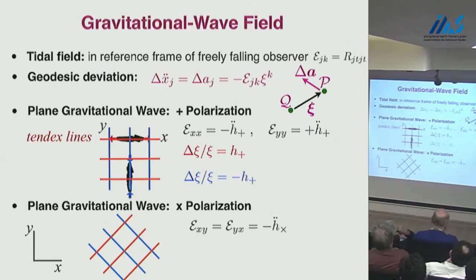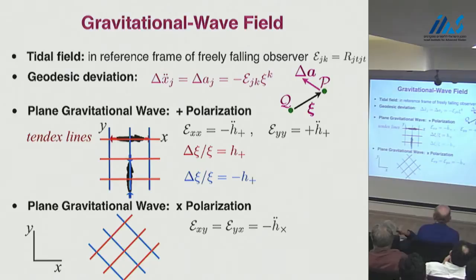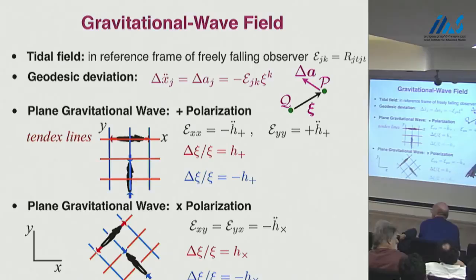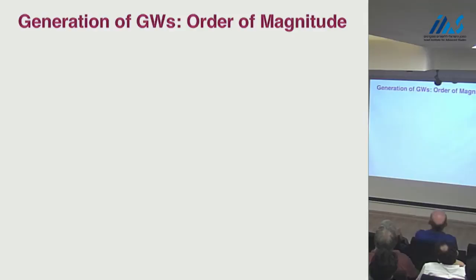For the cross polarization, you have stretching and squeezing at 45-degree lines, and it's h× that produces that — the fractional stretching is h× and minus h× for the fractional squeezing. So h₊ and h× is the way an experimenter likes to talk about a gravitational wave.